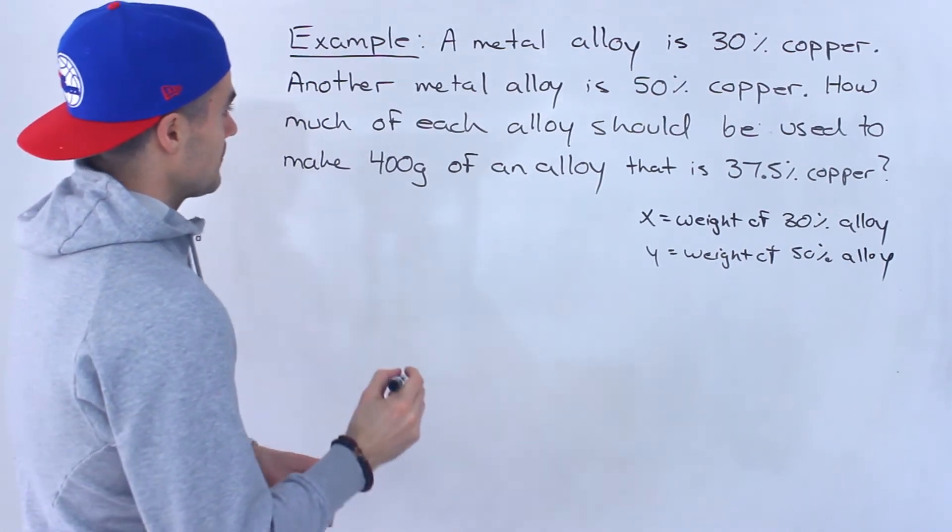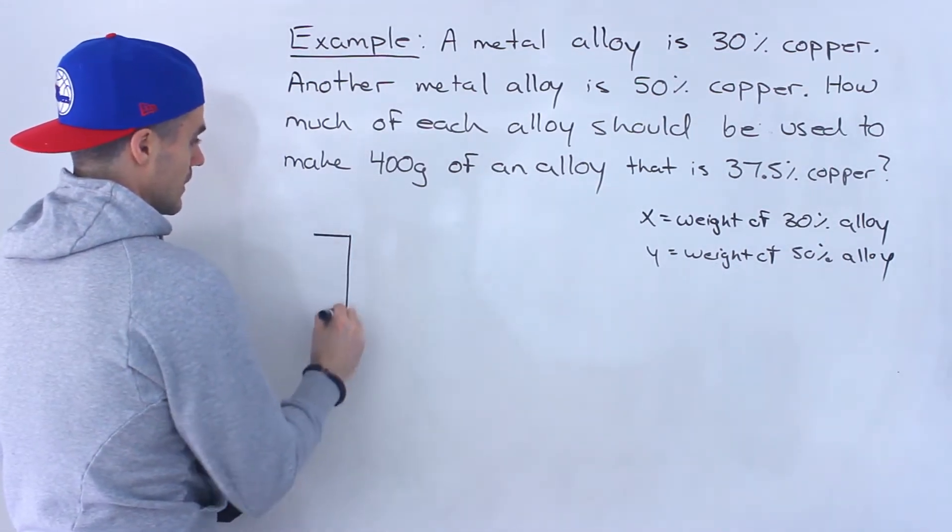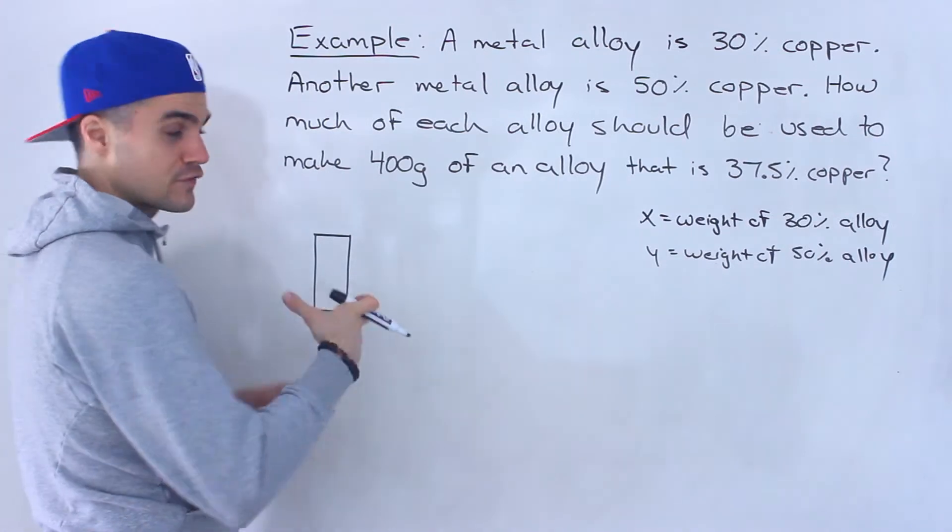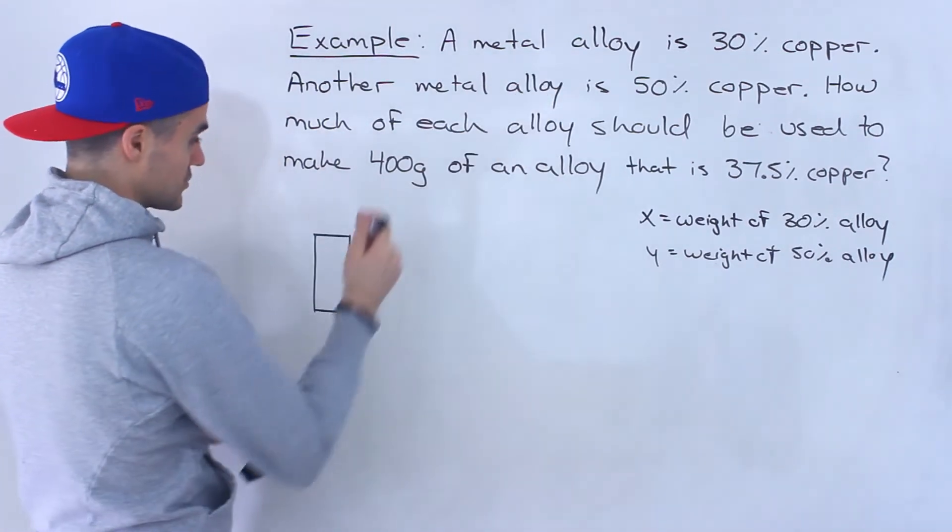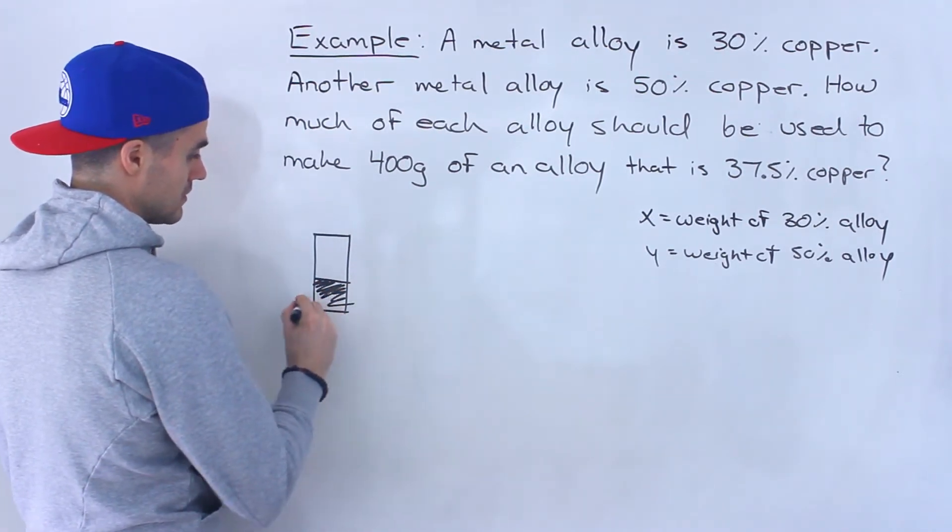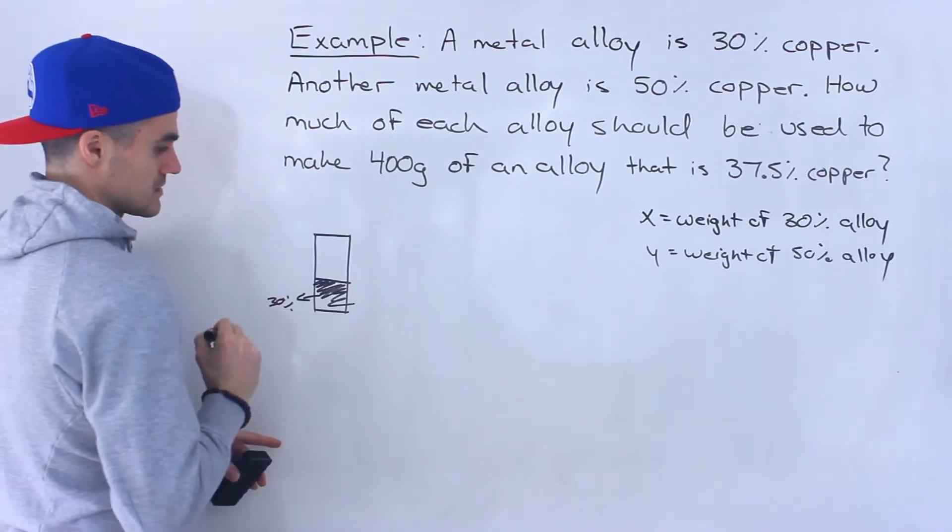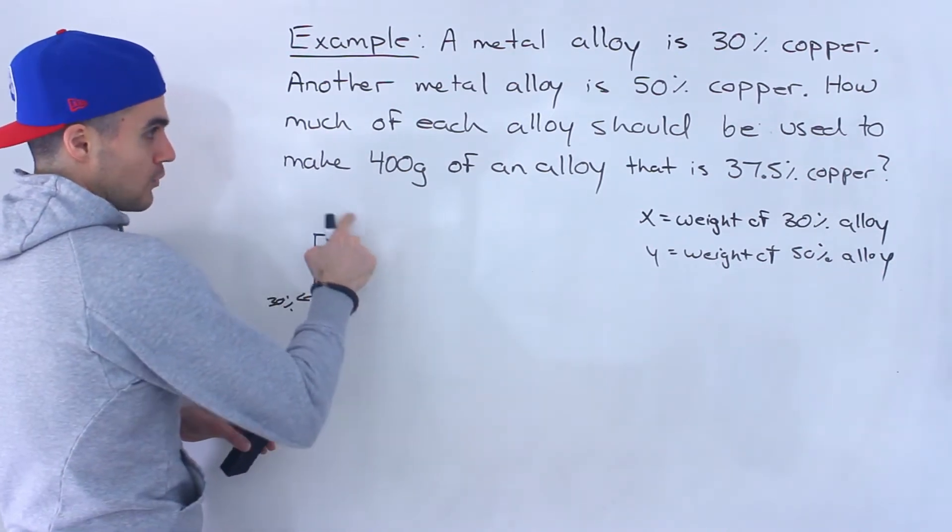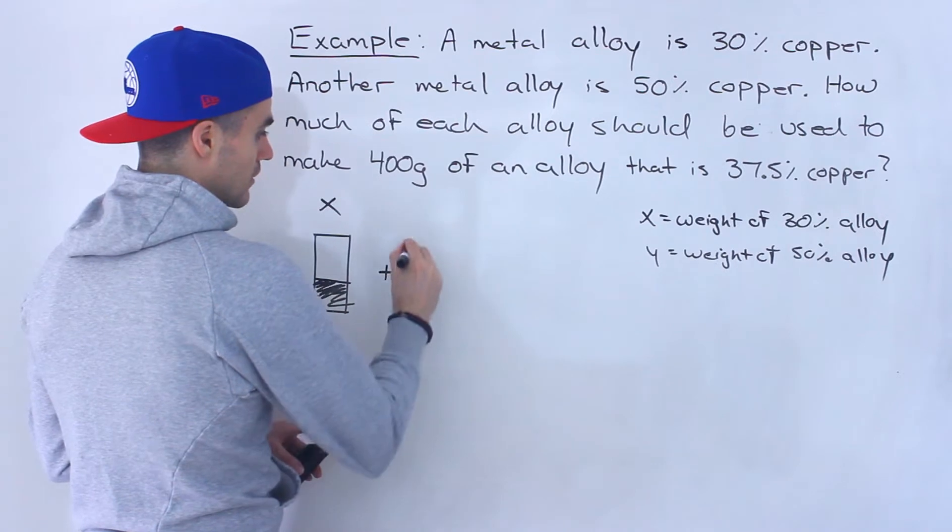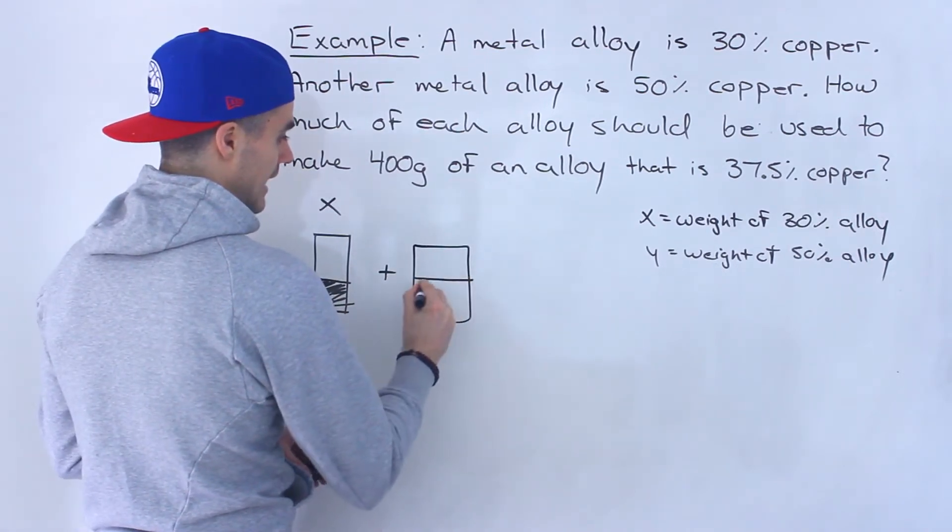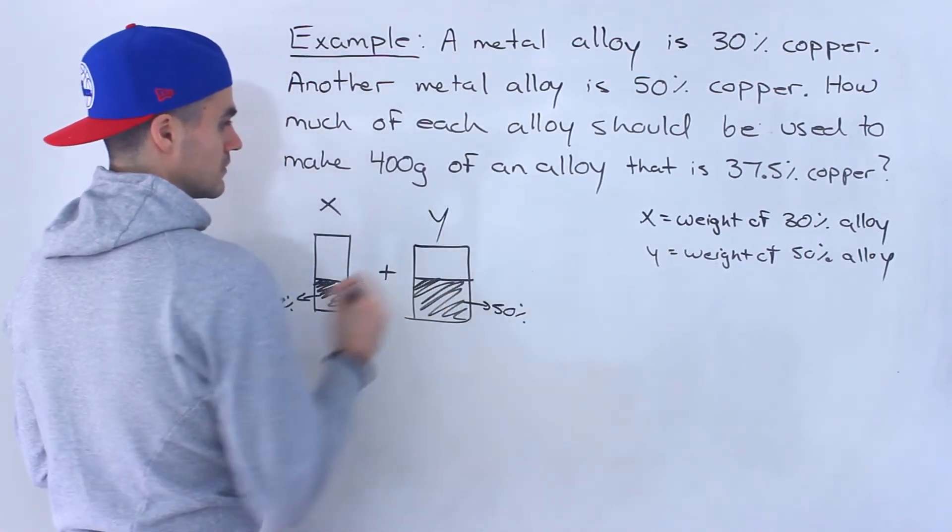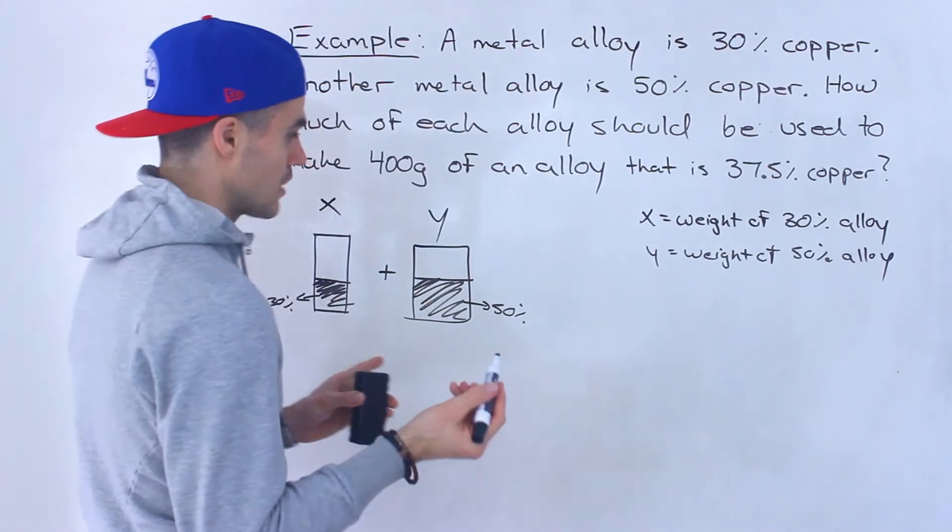And so what's happening here is that if I sort of draw this as a diagram, let's say that this here is the first alloy that we're gonna be using, the 30% copper. So this alloy here has, let's say we shade this in here, 30% copper. And the weight of this alloy here we don't know, some kind of weight x, plus the other alloy that has 50% copper, some kind of weight y. That's what we're gonna be solving for.